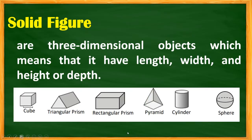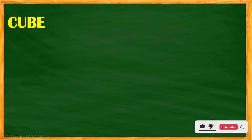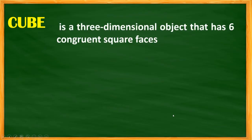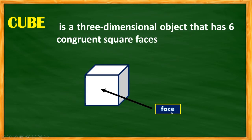Examples of solid figures include cube, triangular prism, rectangular prism, pyramid, cylinder, and sphere. Let's discuss the cube first. A cube is a three-dimensional object that has six congruent square faces. The cube has faces numbered 1, 2, 3, 4 on the sides, 5 for the base, and 6 for the back side — so we have 6 faces in total.